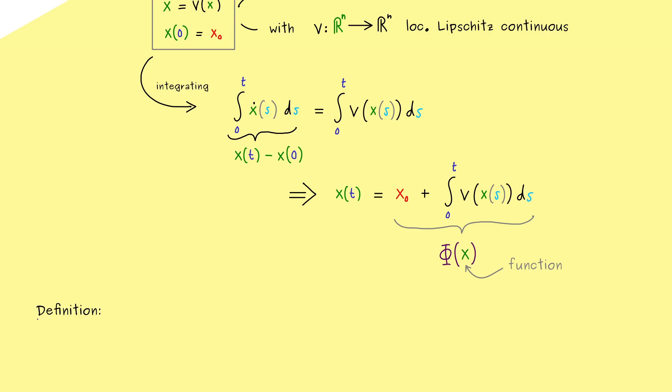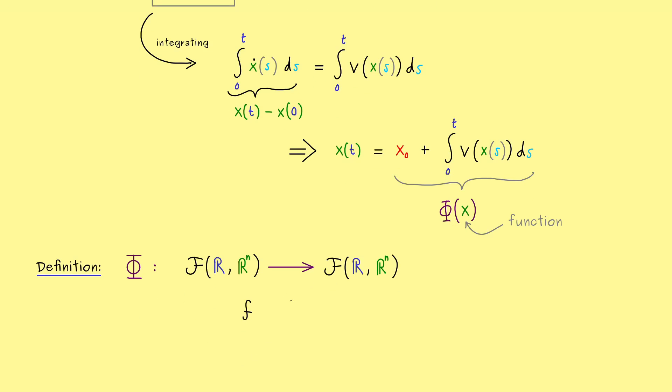For this, you have to recall that x is a function from R into R^n. Hence, our capital phi now is a map from the function space, which we can denote by a curved F, where the input of the function is R and the output is R^n. Or more generally speaking, the output space here should be the domain of definition for our function v. Okay, and now phi maps any function from this function space to another function from the function space. And maybe let's call this function now simply lowercase f.